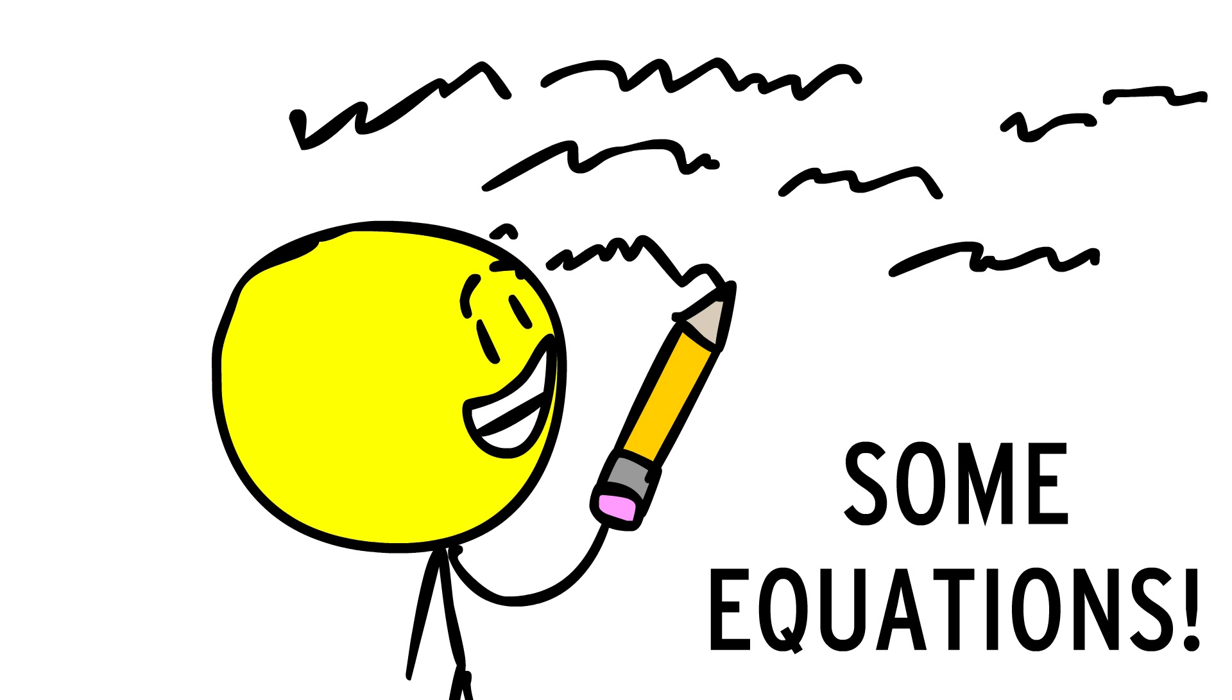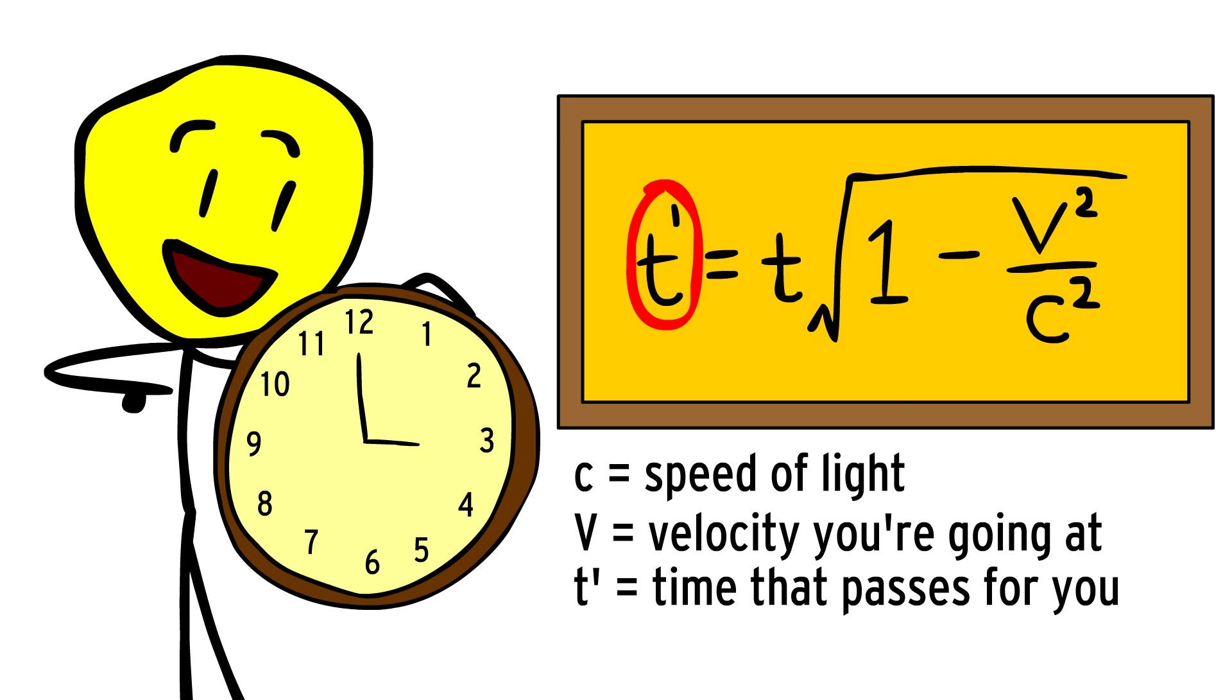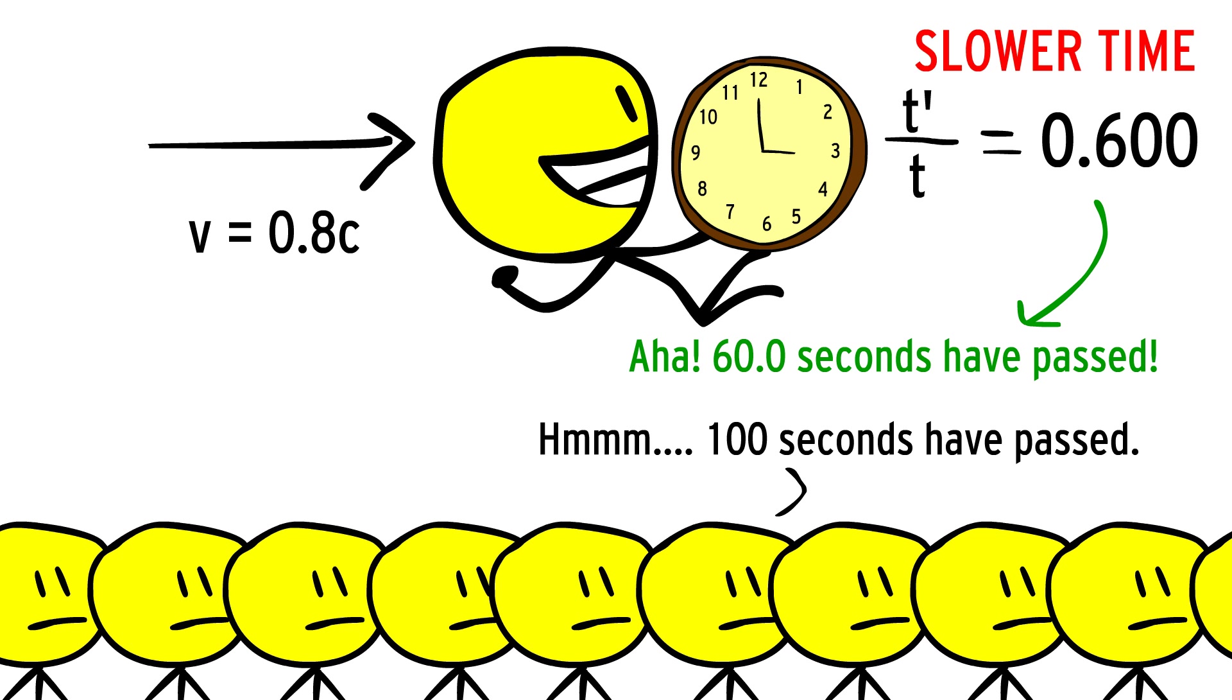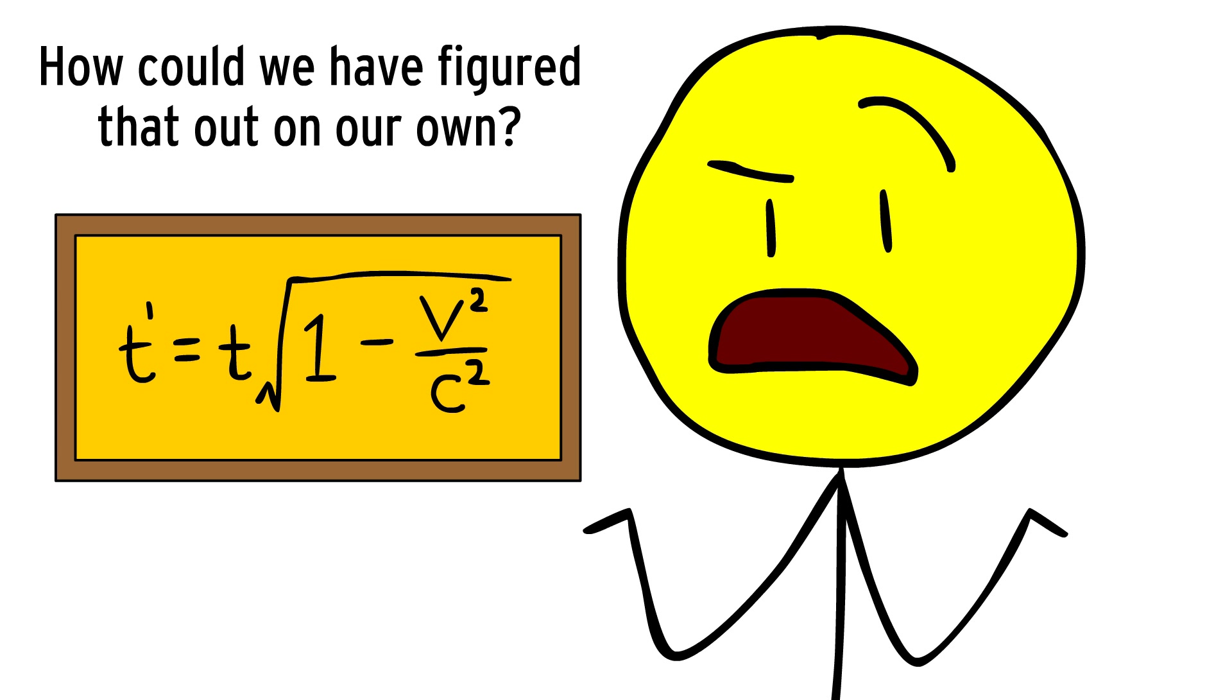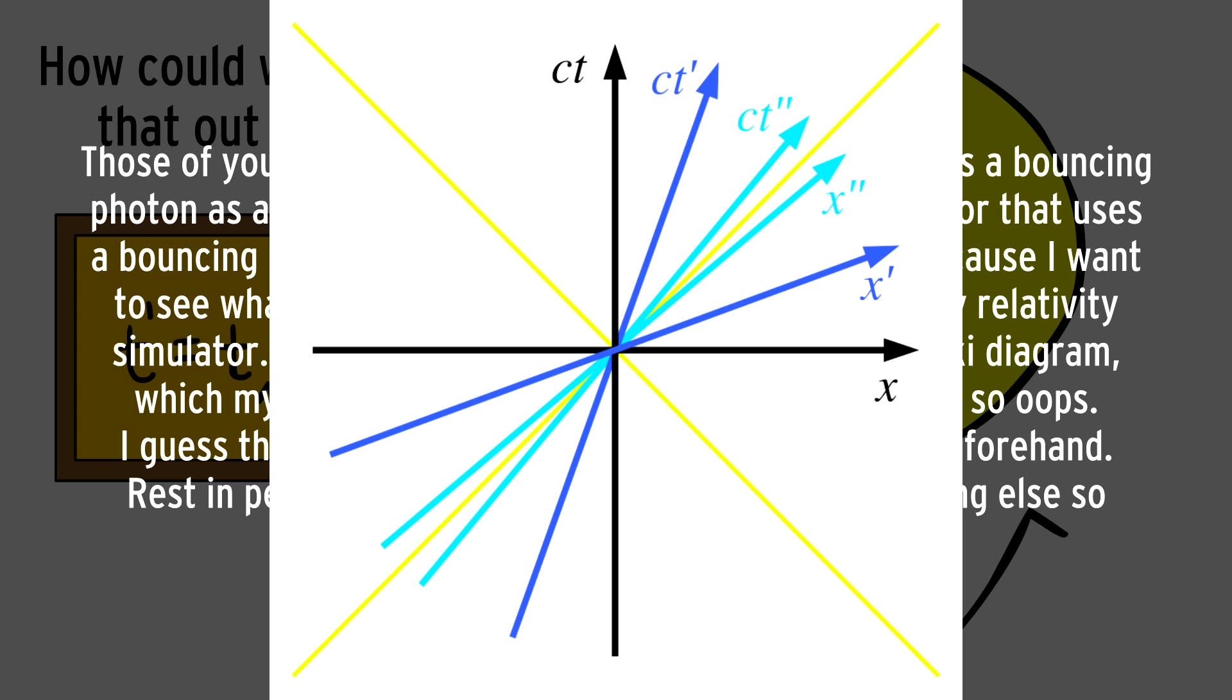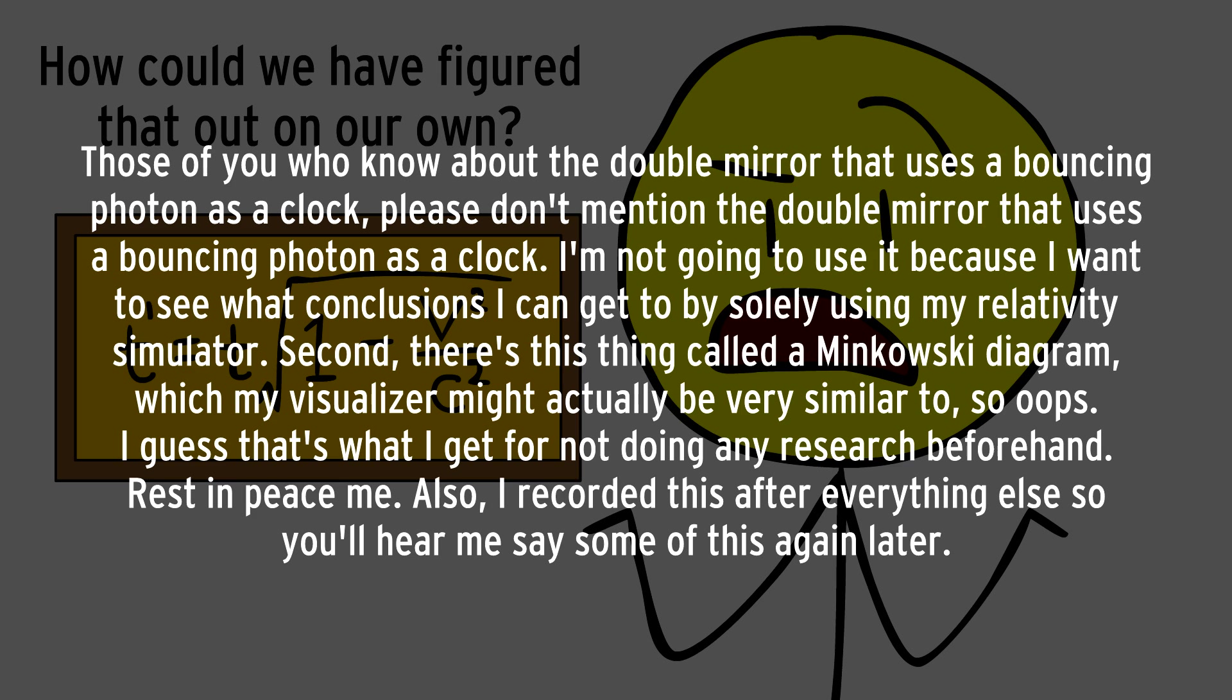Okay, now let's derive some equations. One equation is this, which means that given some velocity V you're going at, your time will pass T prime seconds while everyone else's time passes T seconds. So your time gets T prime over T slower, which is slower the bigger V is. How could we have figured that out on our own? Those of you who know about the double mirror that uses a bouncing photon as a clock, please don't mention the double mirror that uses a bouncing photon as a clock. I'm not going to use it because I want to see what conclusions I can get to by solely using my relativity simulator. Second, there's this thing called a Minkowski diagram, which my visualizer might actually be very similar to, so oops. I guess that's what I get for not doing any research beforehand. Rest in peace, me. Also, I recorded this after everything else, so you're gonna hear me say some of this again later.